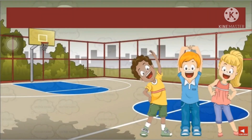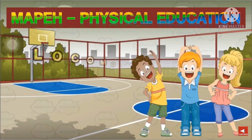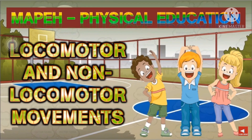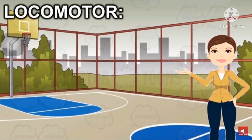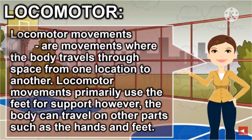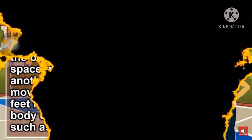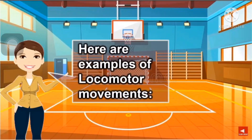So class, before we proceed to Activity 2, let's review our locomotor and non-locomotor movements, which are used in the different festivals presented. We have two kinds of basic movements necessary for expanding physical skills: locomotor movements and non-locomotor movements. Locomotor movements are movements where the body travels through space from one location to another, primarily using the feet for support; however, the body can travel on other parts such as the hands and feet. Here are some examples of locomotor movements.